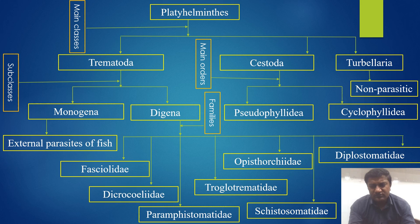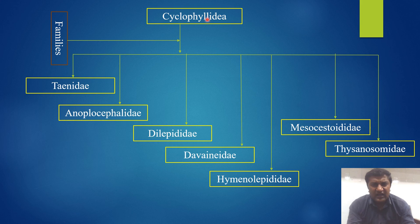The order Cyclophyllidea is divided into the following families: number one is Taeniidae, Anoplocephalidae, Dilepididae, Davaineidae, Hymenolepididae, Mesocestoididae, and Thysanosomatidae.